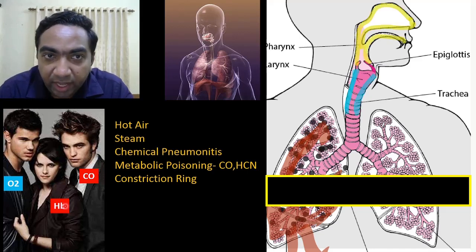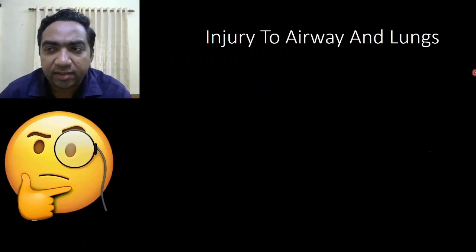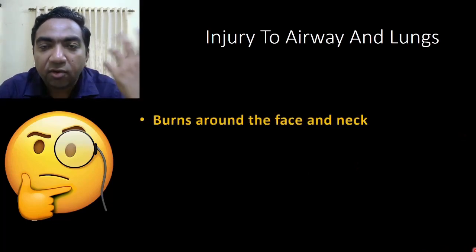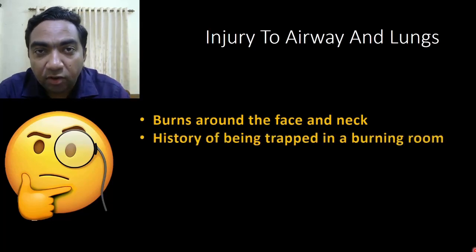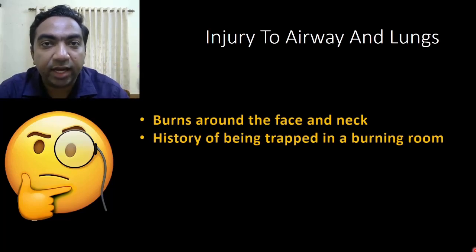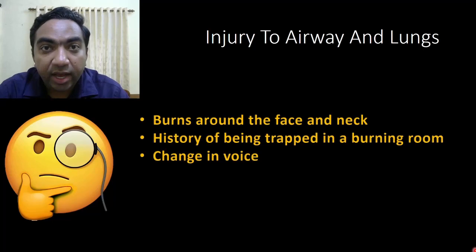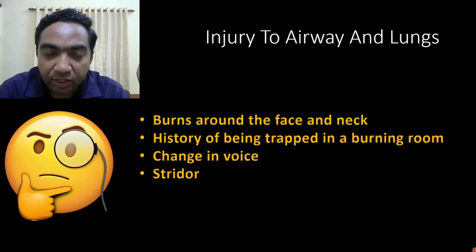These are the different aspects of inhalational injury. How will we know whether there is such an injury? First, look for burns around the face and neck — if present, there is a chance for inhalational injury. Look for a history of being trapped in a burning room; if so, look for carbon monoxide poisoning and a high chance of chemical pneumonitis. Also look for change in voice due to laryngeal involvement and listen for stridor.